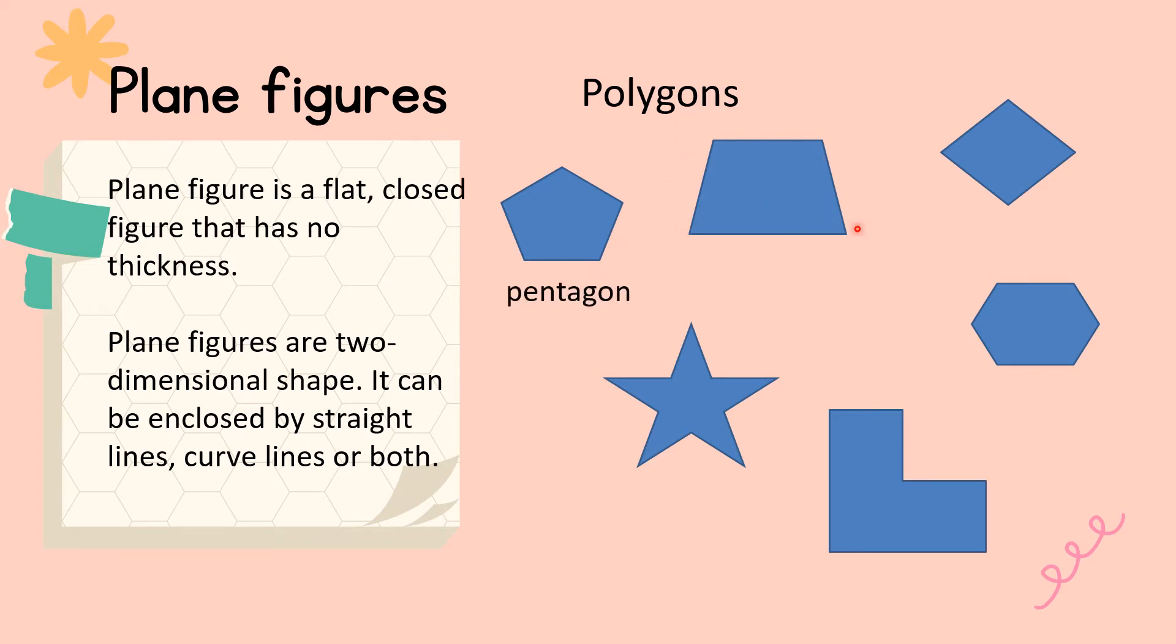This one, that is a quadrilateral, or specifically, we called it trapezoid. This is a rhombus. And this one is a decagon. Why? It has ten sides, decagon. And we have here, hexagon, six sides.